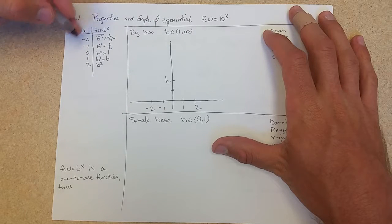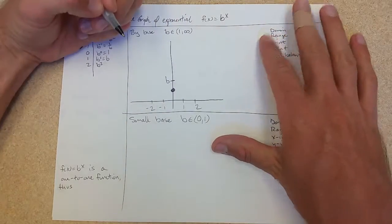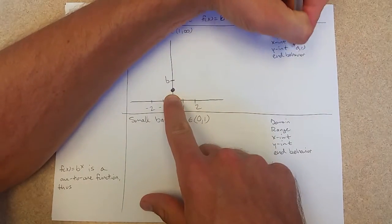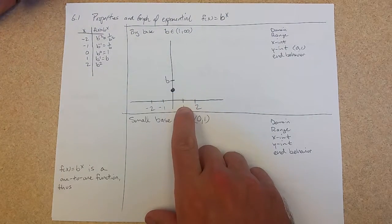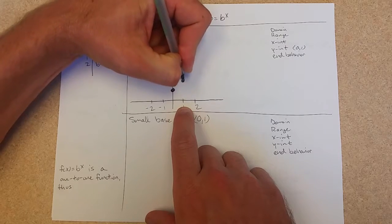Now I'm just plotting out some of these values. The easy one, b to the 0 is 1, right there. And that is our y-intercept, 0 comma 1. b to the 1st is b, so 1 comma b is this point.